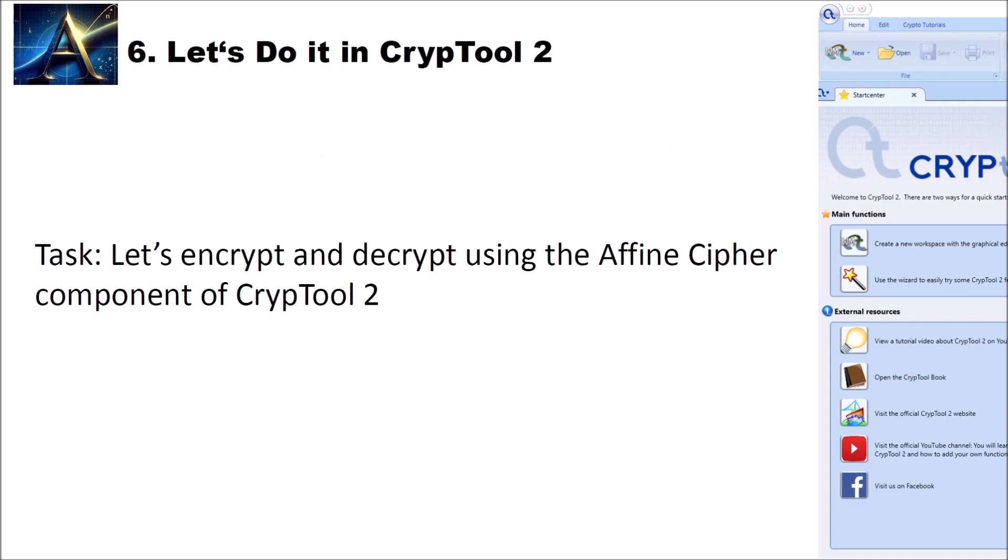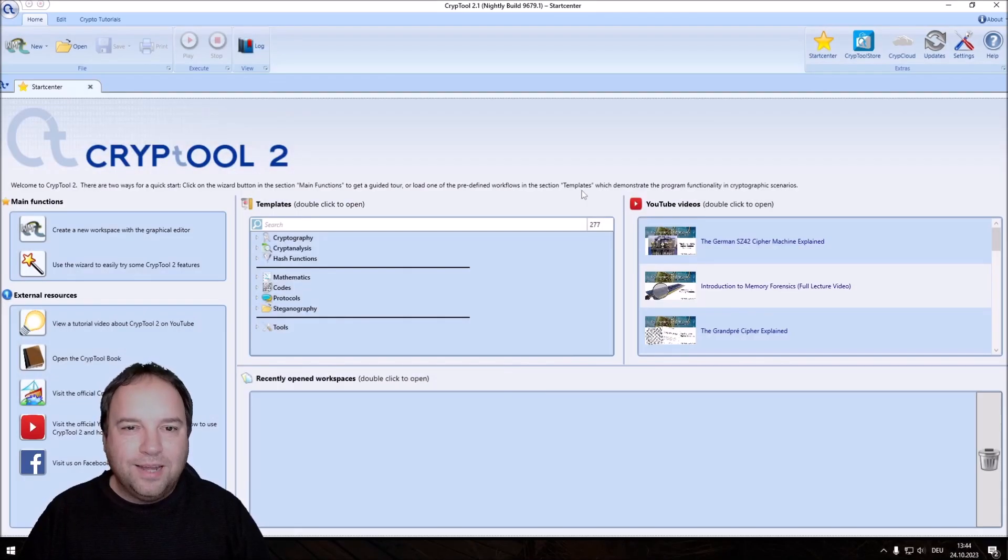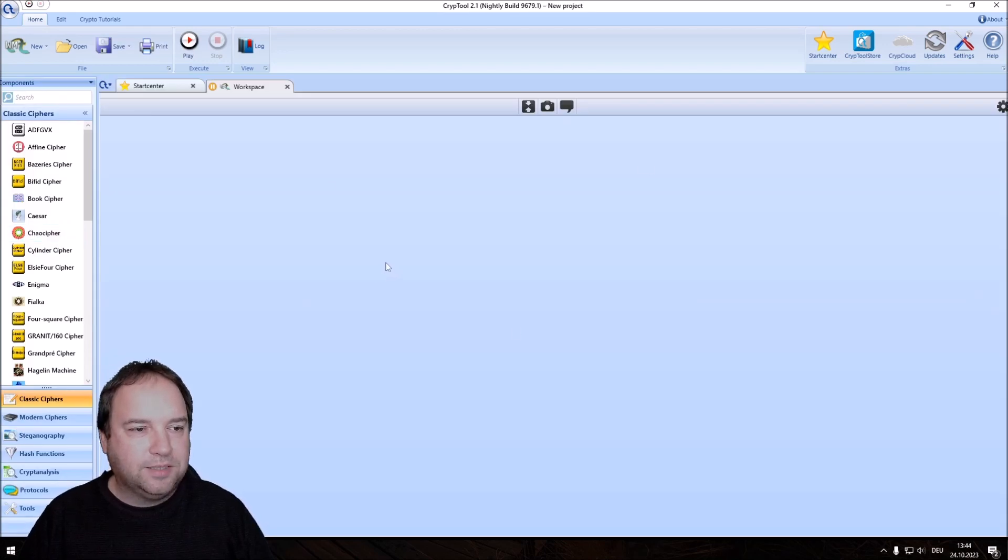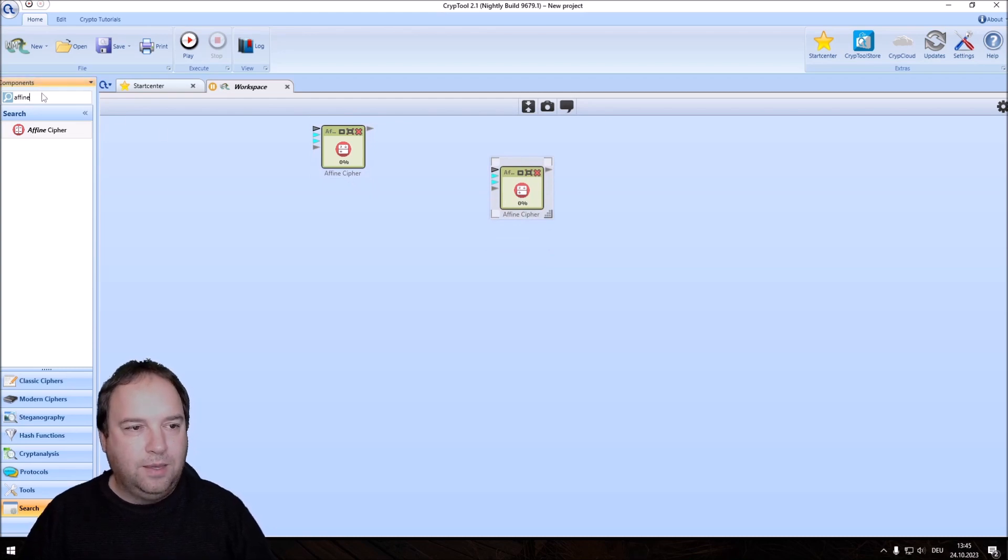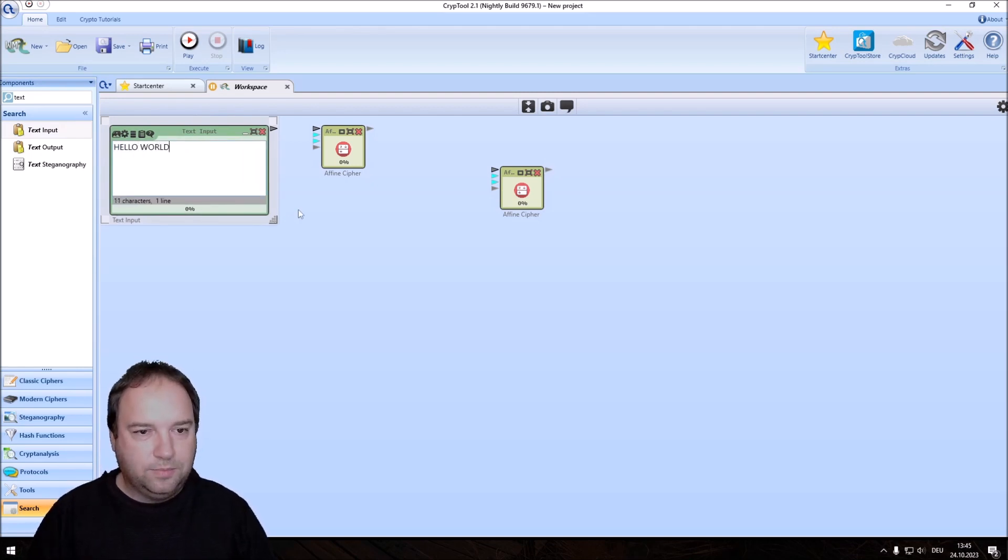Now that we know how the affine cipher works, let's encrypt and decrypt using the affine cipher component of CrypTool 2. I'm here now in the start center of CrypTool 2. I use the nightly build 9679.1. To create a new workspace, I click here and I get a new workspace. Now let's search for the affine cipher in our component list. And I want to encrypt and decrypt. So I put two components on the workspace. We need some text inputs. I need a text input here for our message. This is hello world. I connect the plaintext here.